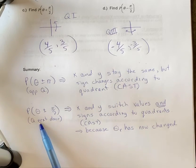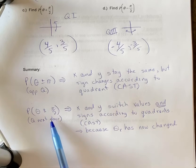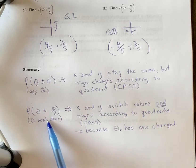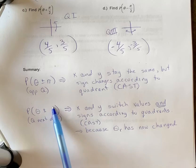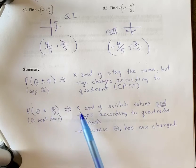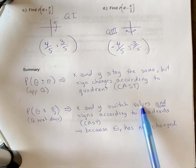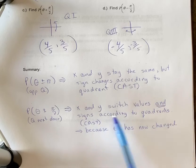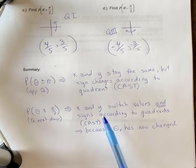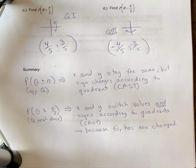If you end up in the quadrant next door, so plus or minus π by 2 could also be 3π by 2, as long as it's got a multiple of π by 2 in there, the x and y are going to switch values and the signs according to the quadrant. So signs are always going to happen, and that's because the reference angle has now changed.